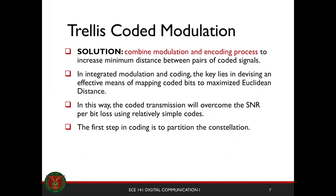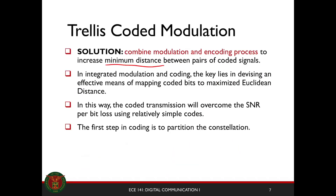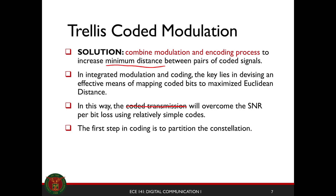The solution to that problem is to combine the modulation and encoding process to increase the minimum distance between pairs of coded signals. Ultimately, the goal is still to increase the minimum distance by combining the modulation and encoding process. We'll be able to increase the minimum distance of a symbol mapping. In this way, your coded transmission will overcome the SNR per bit loss using relatively simple codes. But the first step is to partition the constellation.